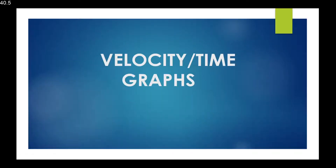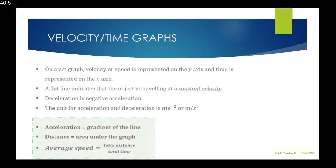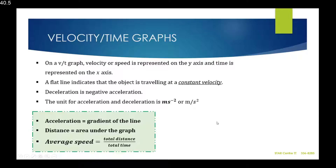Velocity-time graphs. On a velocity-time graph, velocity or speed is represented on the y-axis and time is represented on the x-axis. A flat line on a velocity-time graph indicates that the object is traveling at a constant velocity.